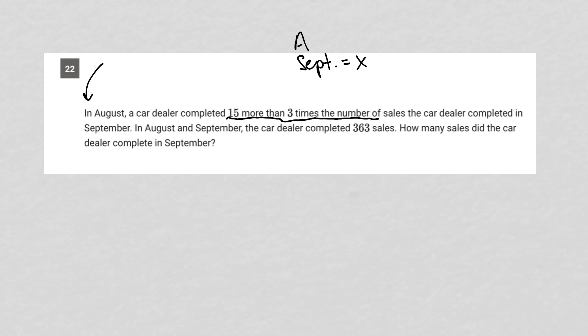But we're told that for August, it is 15 more than three times those number of sales. So August should be 3X plus 15, right? 15 more than three times the number of sales.